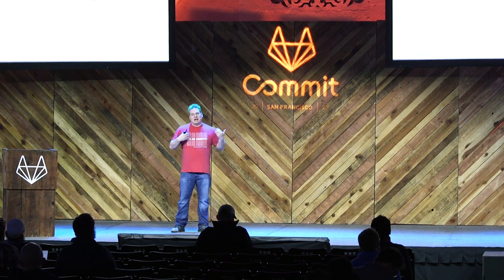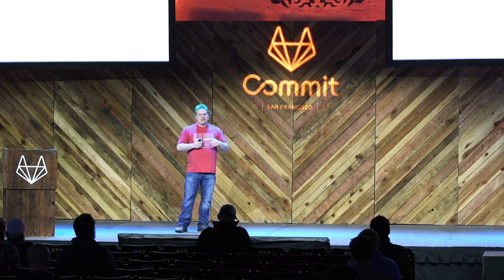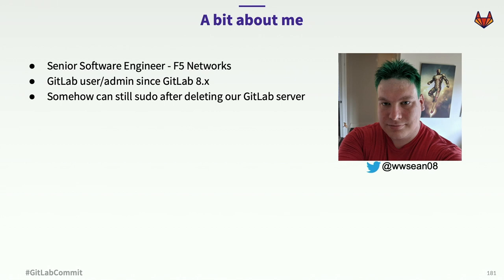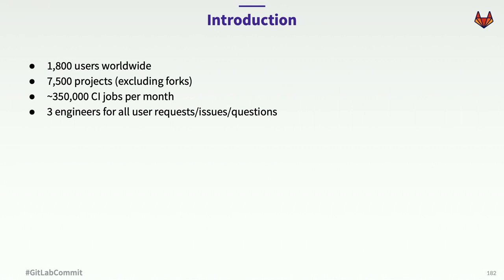A bit about me: I'm a software engineer at F5 Networks. I've been using GitLab since around 8.x, and even though I've done an rm -rf slash on our GitLab instance, I still have sudo access. We have about 1,800 users worldwide, 7,500 projects roughly — excluding forks. Somewhere around 350,000 to 400,000 CI jobs are kicked off every month, most going through the runners my team manages.